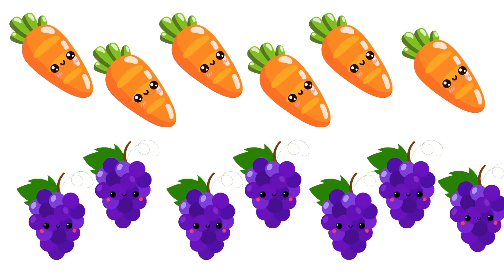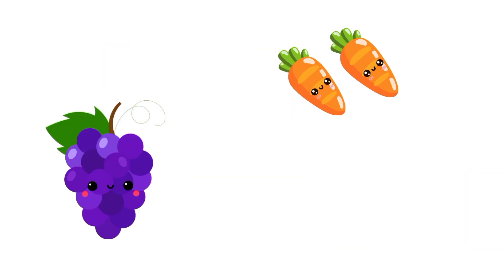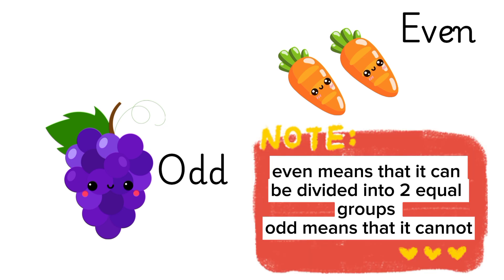There are six carrots and seven grapes. I wonder if these numbers are even or odd. Even means that it can be divided into two equal groups. Odd means that it cannot.